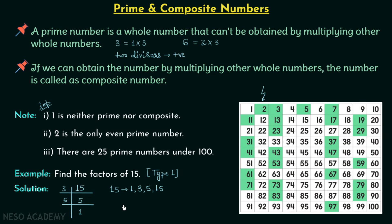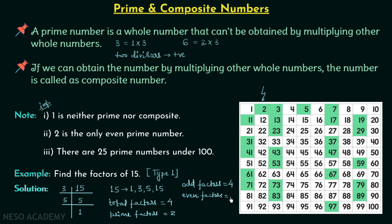The total number of factors of 15 is 4. The total number of prime factors is 2 — those are 3 and 5. There are 4 odd factors: 1, 3, 5, and 15, which means even factors are zero. For a small number like 15 the conventional method is easy, but for a larger number like 7200 we will need a shortcut method, which we will cover in the next lecture. That is all for this lecture — see you in the next one.